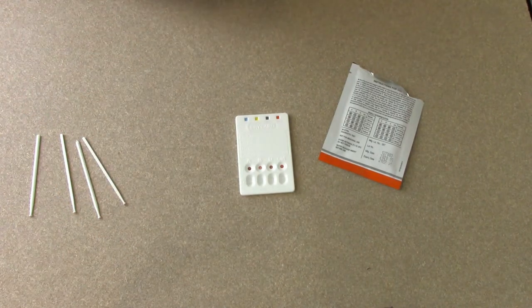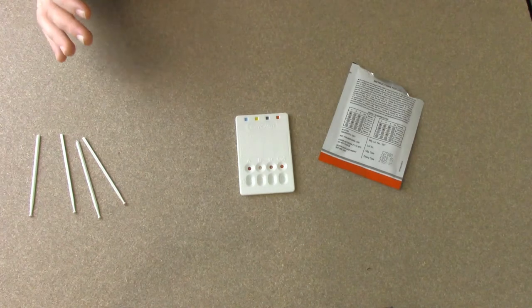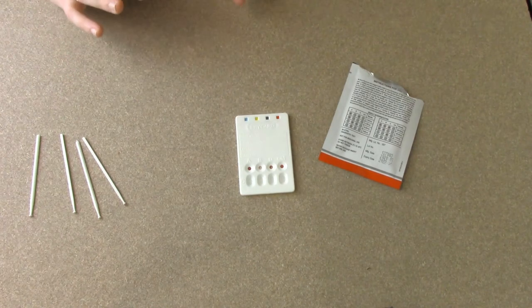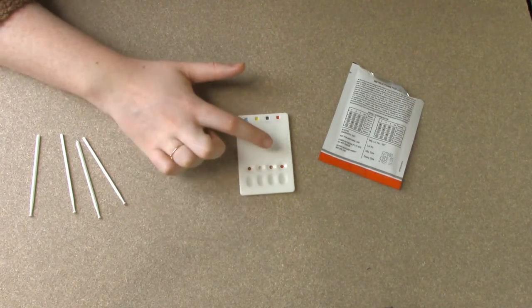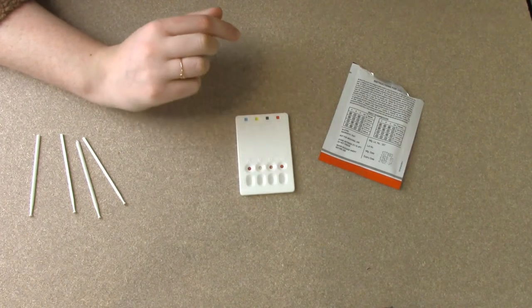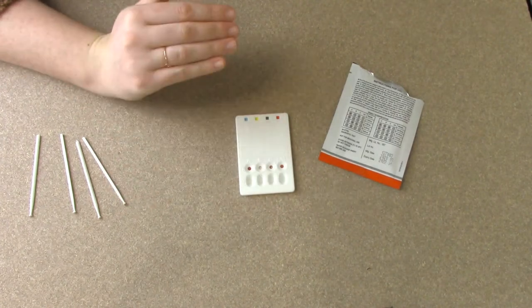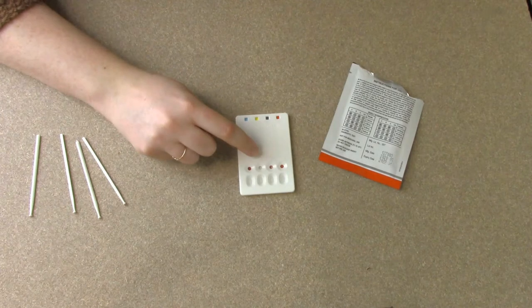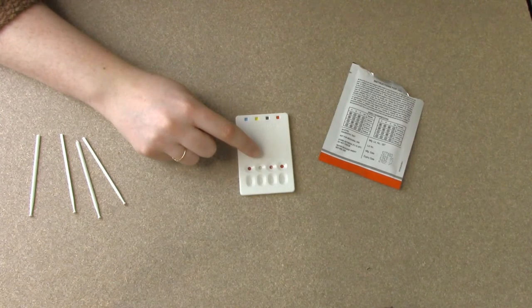All right, now we just get to watch and see what happens over the next three minutes. Basically, what is going to happen is this will start to change. The test will change in certain wells will stay red or they will completely become clear. You can see that B is losing all of its color.